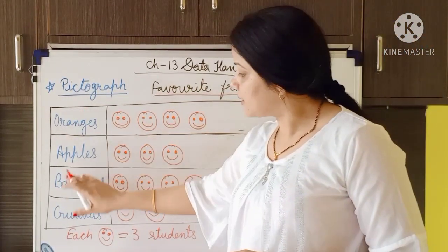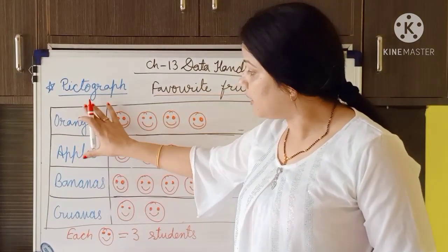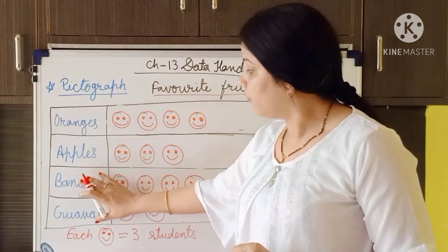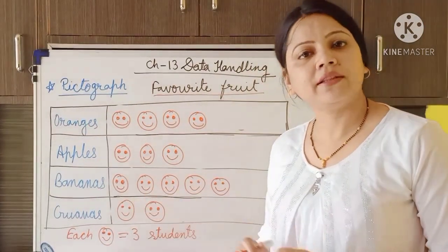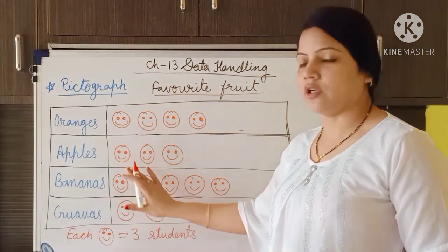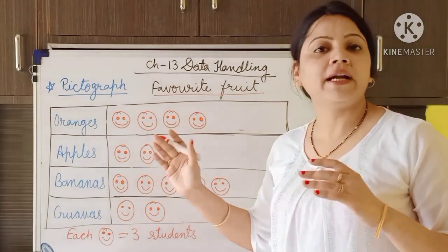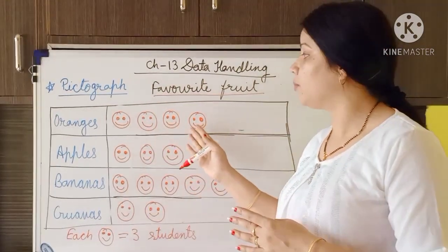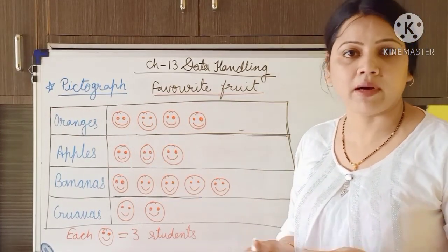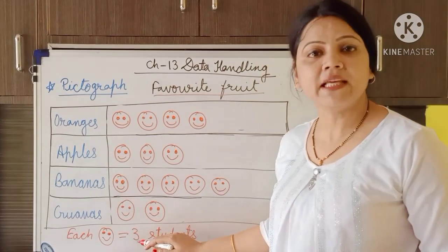The second part is called the Label. This label describes the fruits that are liked by the students. The third one is the Picture — it describes the information regarding the students, how many people liked oranges, how many liked bananas, how many liked guavas. The fourth one is the Key.